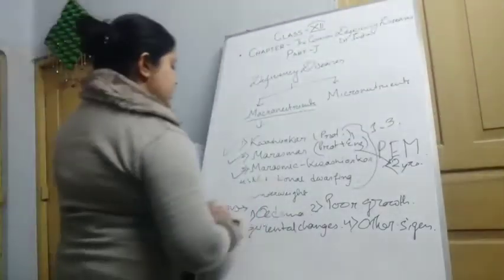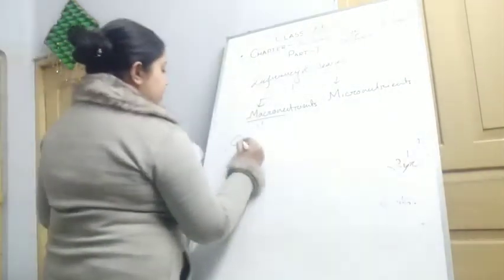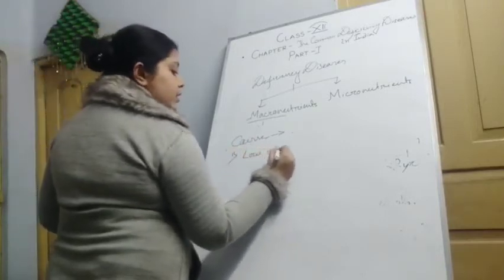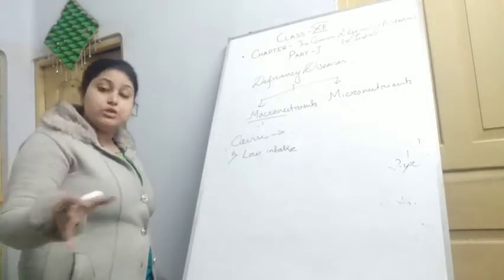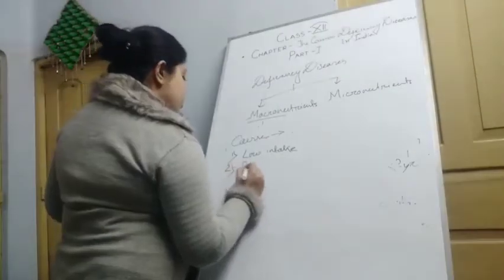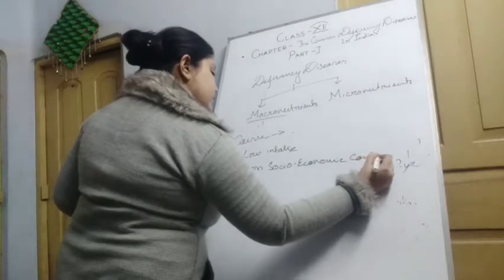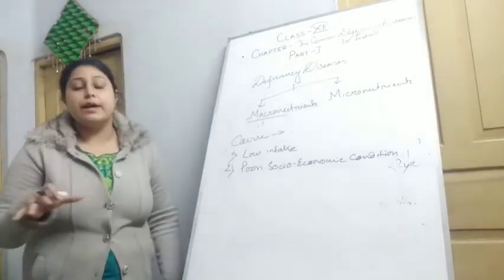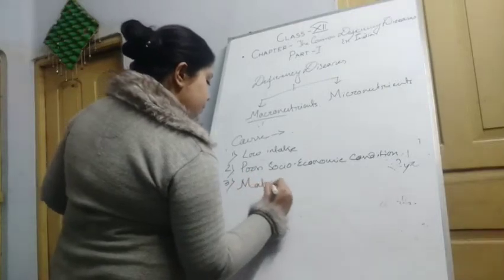Now we will talk about the causes of PEM. The first is low or improper intake of food — they do not consume proper carbohydrates, energy, and proteins. The second is poor socio-economic condition; these problems are mainly seen in those who are socio-economically weak, below the poverty level. The third is maternal malnutrition.